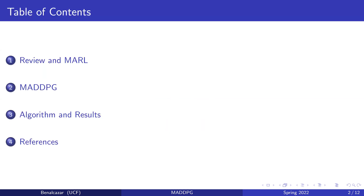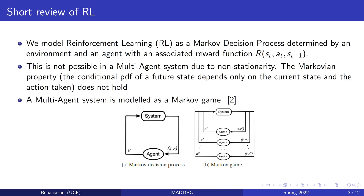First I will go through a short review of reinforcement learning and the problems that occur when we expand it to a multi-agent framework, then describe the algorithm and show the results. We model reinforcement learning as a Markov decision process determined by an environment and an agent that interacts with the system, taking actions and receiving new states and rewards.